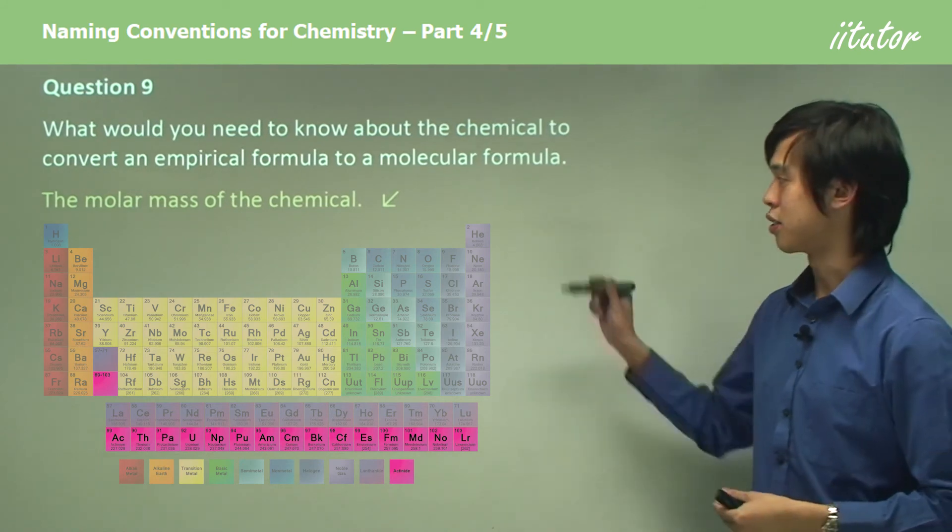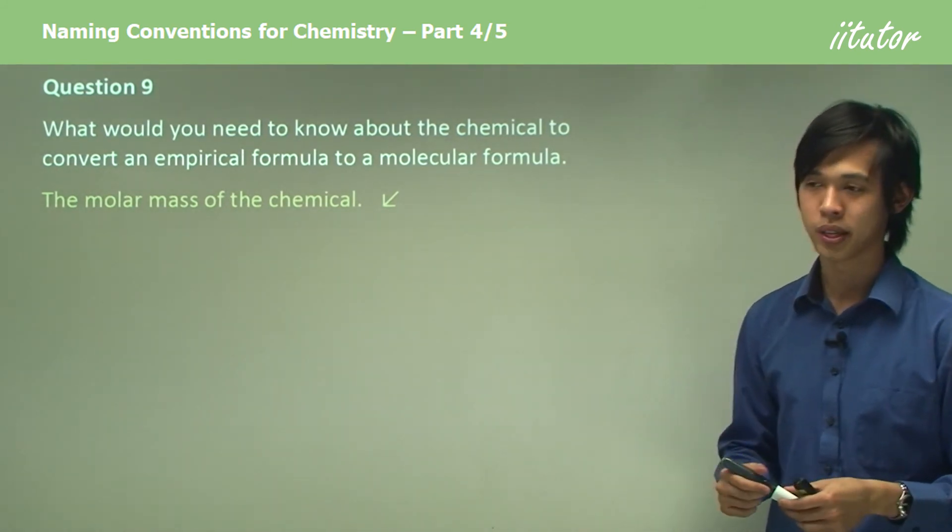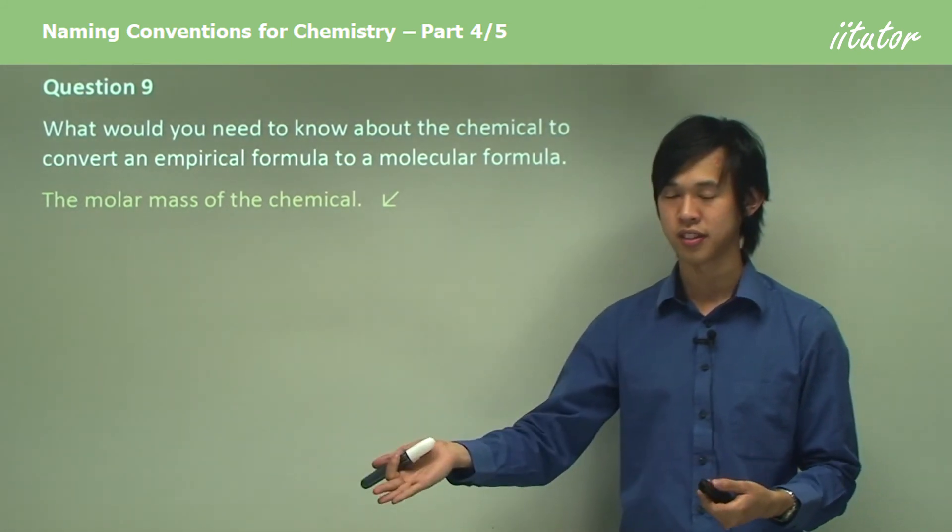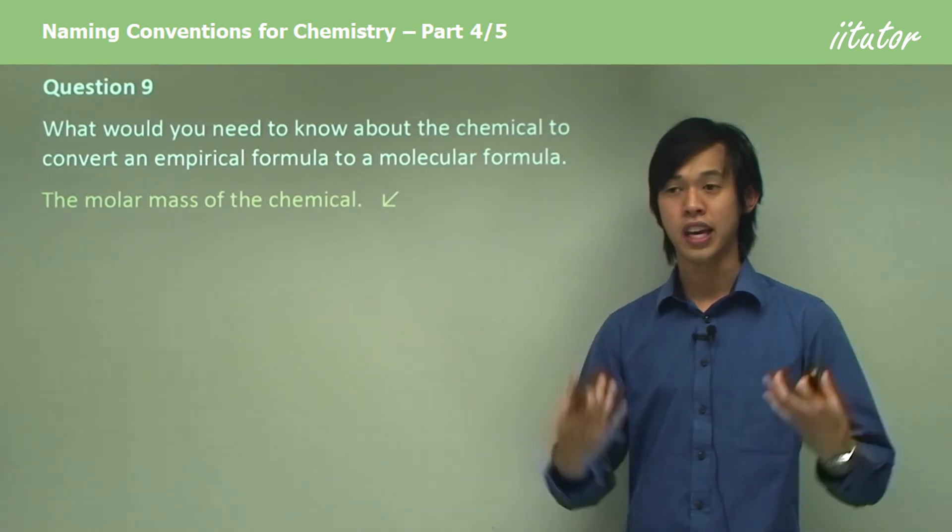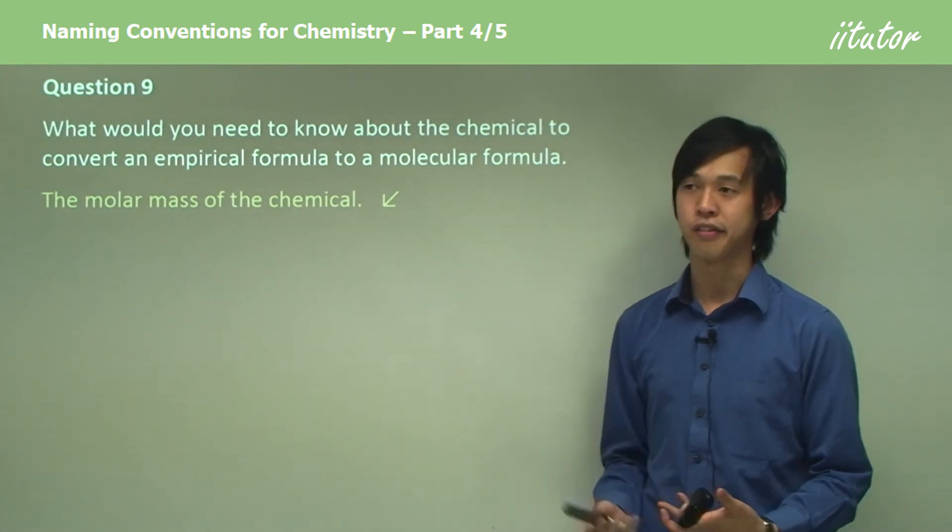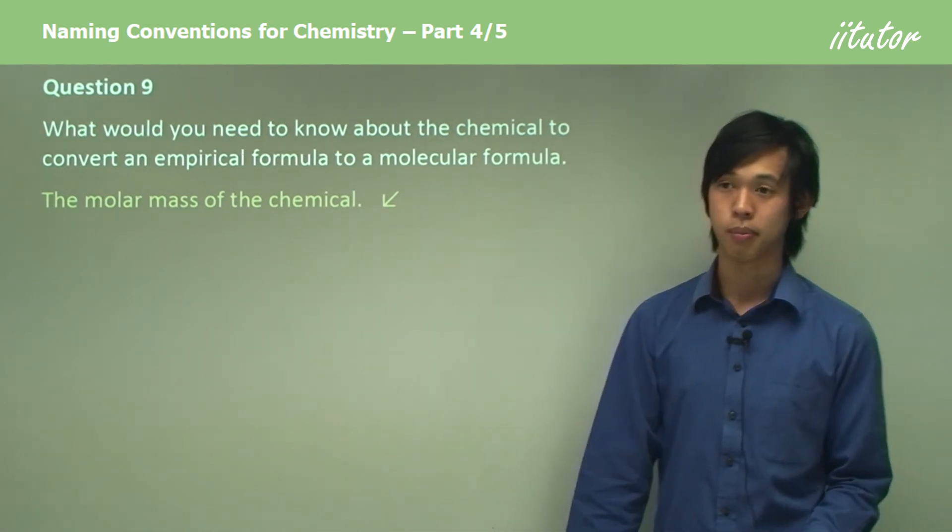So if it's CO2, it would just be the molar mass of carbon plus the molar mass of oxygen plus the molar mass of oxygen. So all you need to know about the chemical in order to change between empirical and molecular formula is the molar mass of the chemical.